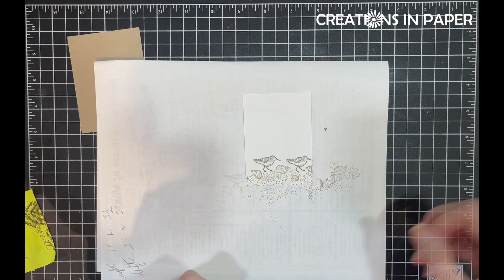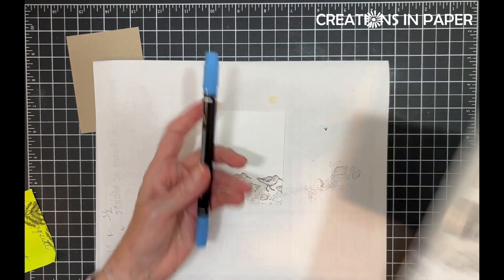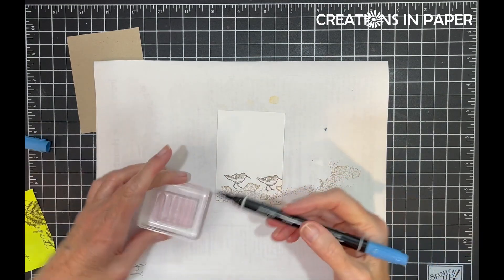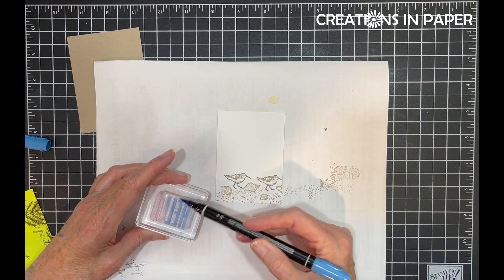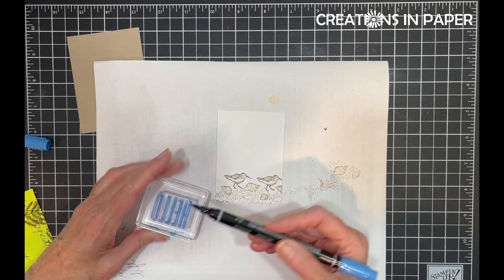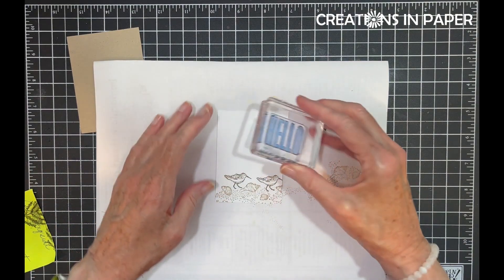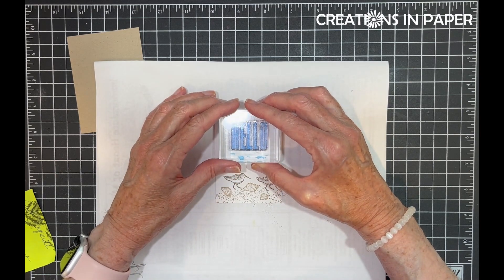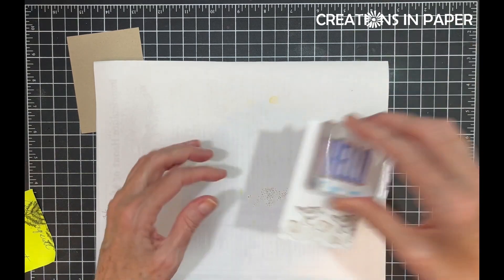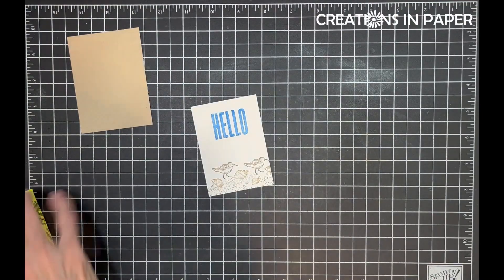Now this is where I need my sentiment, so let me go see if I can find a sentiment. I'm going to use the block letter hello and I'm going to use my Azure Afternoon marker because I don't have the stamp pad. I'm going to color in my sentiment. And when you stamp this make sure you stamp it the right way and I'm going to stamp hello right in the middle.